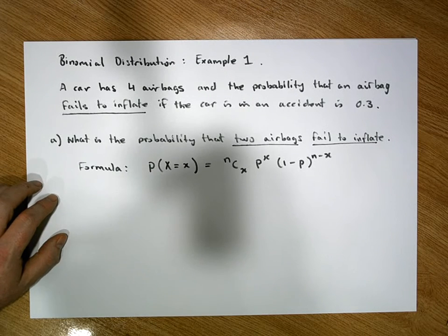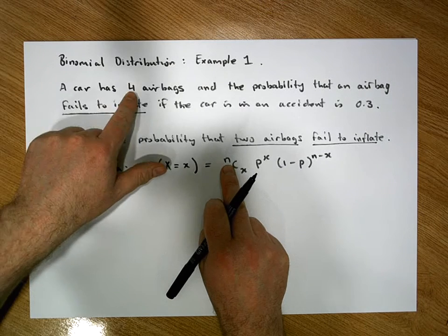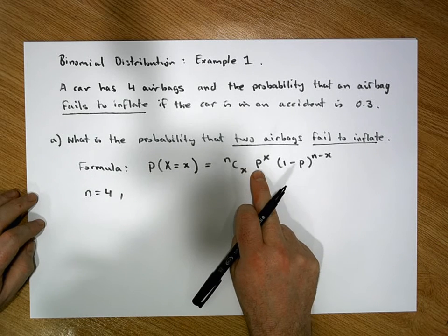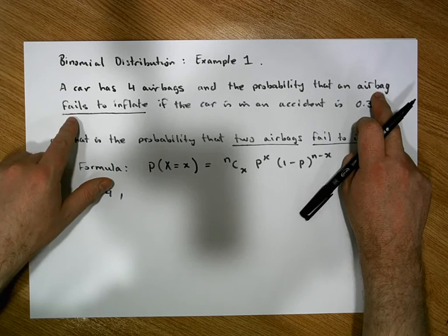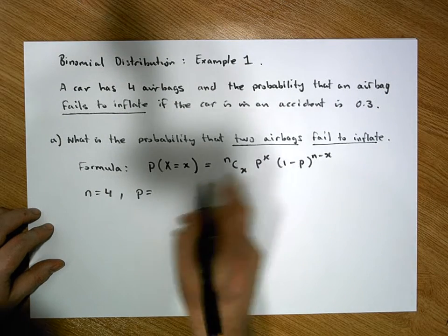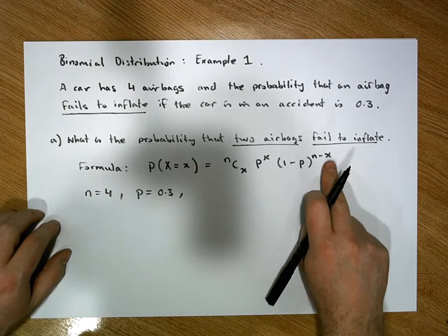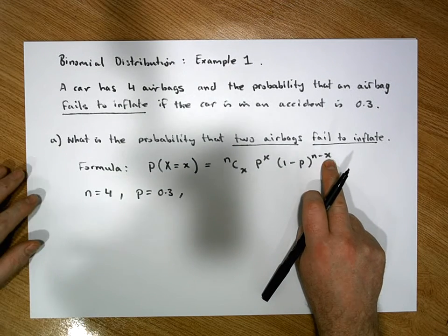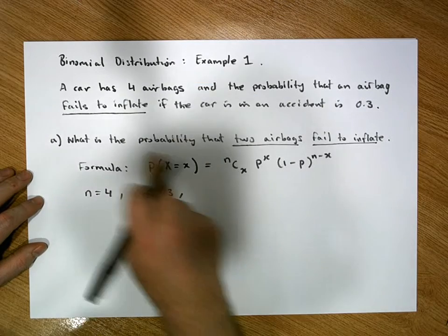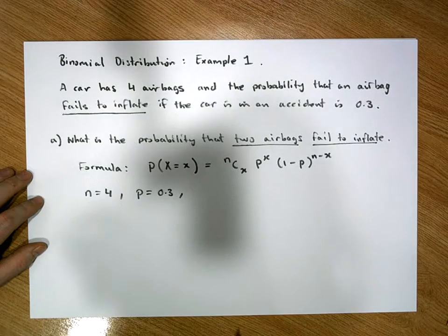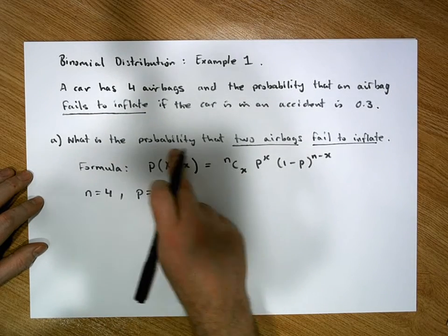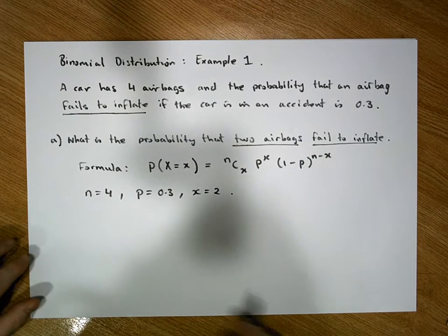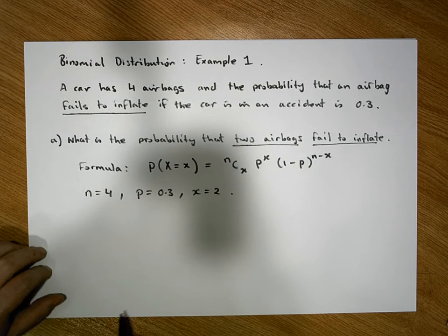To calculate any binomial probability we need three things: n, the total number of objects — here we have four airbags, so n = 4; p, the probability of the event for one object — here airbags failing to inflate, so p = 0.3; and x, how many of the n objects we're interested in — the question asks about two airbags failing, so x = 2.